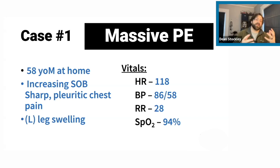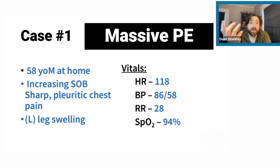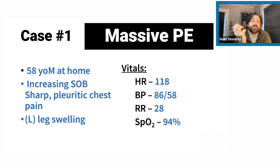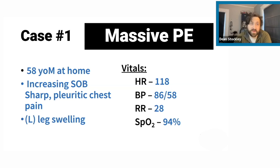PE in general means you have a clot somewhere in the pulmonary vascular system. A low-risk PE means you don't have a hemodynamic consequence from that clot load. Intermediate risk, or sub-massive — those terms are used interchangeably depending on what book you read — means you have signs and symptoms of right heart failure, like right ventricular dilation on ultrasound, but no hemodynamic consequence yet. That obstruction is causing backflow, just not enough to drop the blood pressure yet.